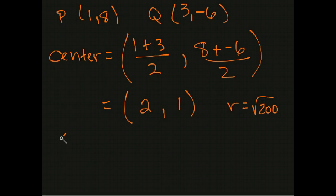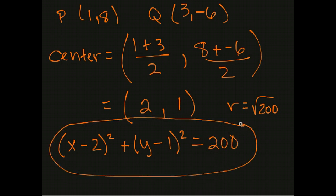So our equation of our circle is (x - h). Here, that's 2. Plus (y - k). In this case, that's 1. Equals r². Well, what's the square of the square root of 200? That's 200. And there's our equation of our circle.